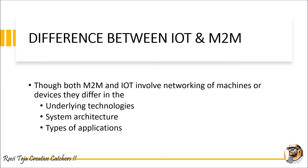Hello everyone, welcome to the course Fundamentals of IoT, in short FIoT. In today's class we are going to know the difference between IoT and M2M. IoT is Internet of Things, M2M is Machine to Machine communications. Though both involve networking of machines or devices, they differ in underlying technologies, system architecture, and type of applications. We are going to see some parameters showing how IoT differs from M2M.